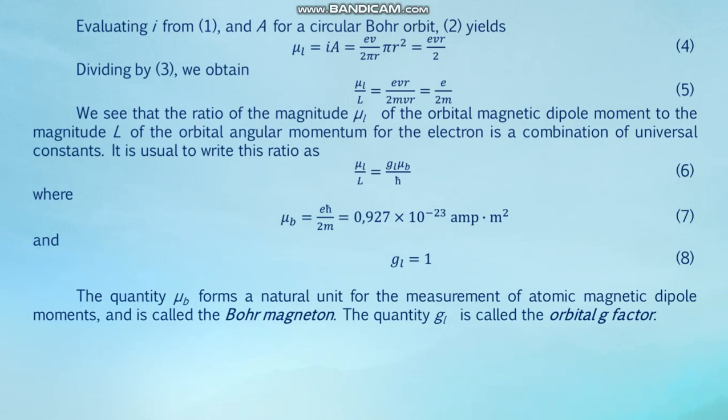Evaluating I from formula one and A for the circular Bohr orbit and substituting into formula two yields μ_L = I·A = evr/2, formula four. Dividing by the same formula, we obtain μ_L / L = e/(2m), formula five.